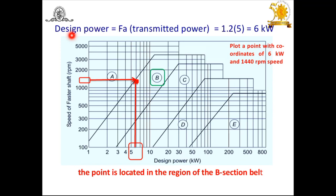After getting FA, we find the design power. The transmitted power is 5 kW and FA = 1.2 from the first step. So design power = 1.2 × 5 = 6 kW.